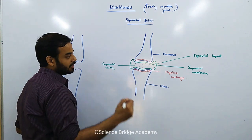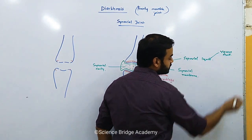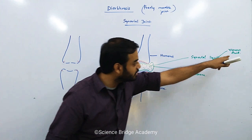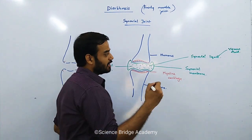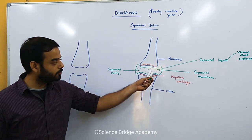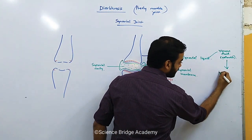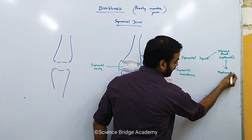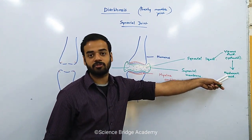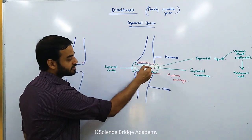The synovial fluid is a very thick, viscous fluid. Its color is slightly yellowish — many refer to it as straw-colored, meaning pale yellow. The chief component of this fluid is hyaluronic acid, which is responsible for making it viscous. Interestingly, the same hyaluronic acid is also present in sponges, and we will revisit this when we study sponges.